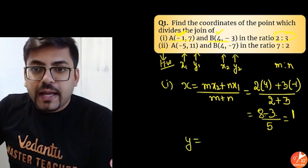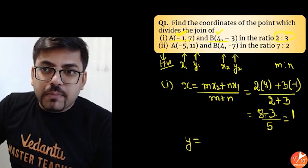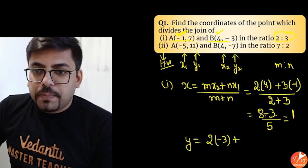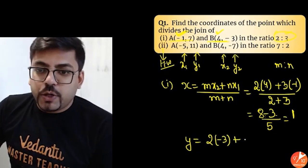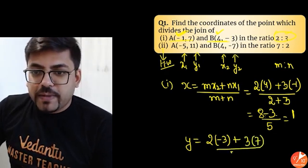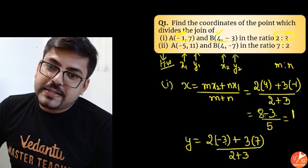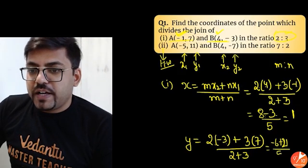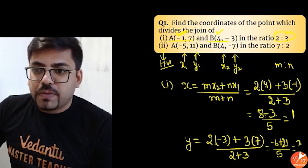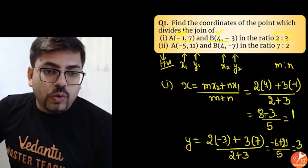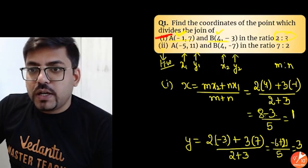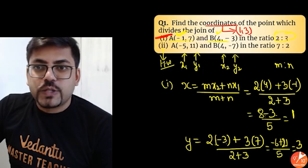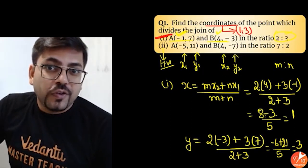Now in the same fashion we do it for Y: M·Y2 plus N·Y1 upon M plus N. So 2 into minus 3, plus N·Y1 which is 3 into 7, divided by M plus N that is 2 plus 3. 2 into minus 3 is minus 6 and 3 into 7 is 21. So minus 6 plus 21 is 15, divided by 5. Answer is 3. So finally the coordinates are 1 comma 3 for the first case.